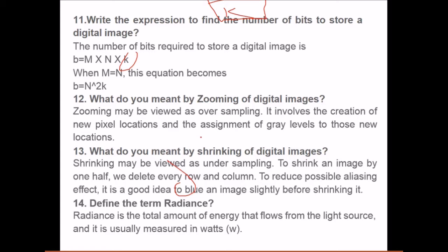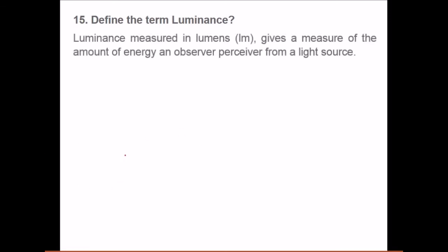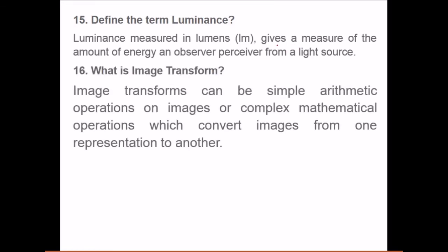Define the term radiance. Radiance is the total amount of energy that flows from a light source and it is usually measured in watts. Radiance is the amount of energy that comes out or flows from the light source. Now define the term luminance. Luminance which is measured in lumens, it gives a measure of the amount of energy as observed or perceived by the observer from a light source. Radiance is what has been sent and given by a light source, and luminance is what has been observed.